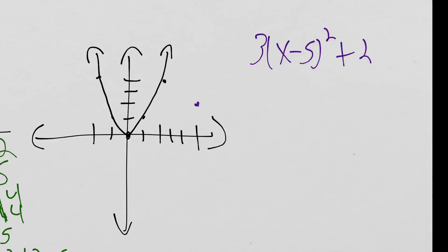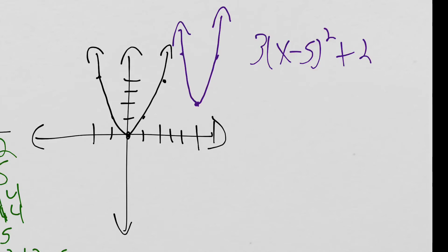Since we know we're getting 3 times steeper, originally we went over 1 and up 1 from the vertex, but since we're 3 times steeper, when we go over 1 we have to go up by 3. So we go over 1 unit and up 1, 2, 3. We know the general shape from the original graph, so that gives us a steeper parabola that has been shifted 5 to the right and 2 up.